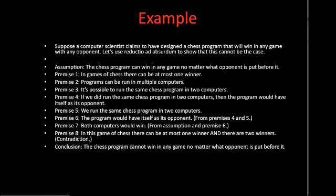Premise four: if we did run the same chess program in two computers, then the program would have itself as its opponent. Premise five: suppose we run the same chess program in two computers. Premise six: from premises four and five, it follows that the program would have itself as its opponent. Premise seven: both computers would win, because the assumption says the program would win in any game of chess no matter which opponent it faces, and premise six says the chess program has itself as its opponent.